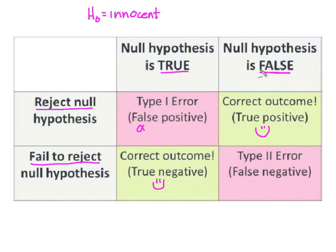What happens when the null is false? This person is not innocent, but we fail to reject the null hypothesis. In other words, we let this assumption of innocence continue.